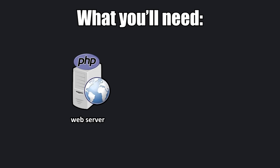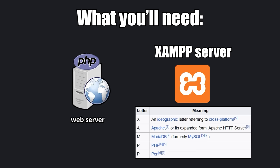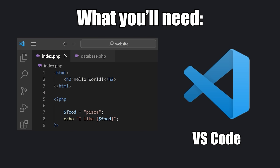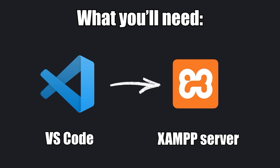XAMPP is a cross-platform web server solution stack — basically a software suite. It contains an Apache server, MySQL, and PHP. You'll also need a text editor to write your code. VS Code tends to be the most popular nowadays, and that's what I use. We'll write our code with VS Code, then run it on our XAMPP server since we can't run PHP directly in a web browser.